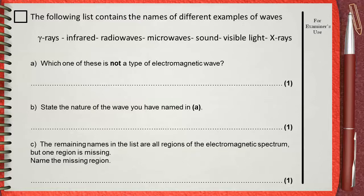a. Which one of those is not a type of electromagnetic wave? b. State the nature of the wave you have named in a. c. The remaining names in the list are all regions of the electromagnetic spectrum, but one region is missing. Name the missing region.